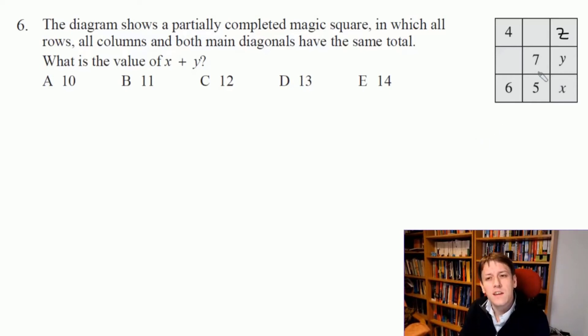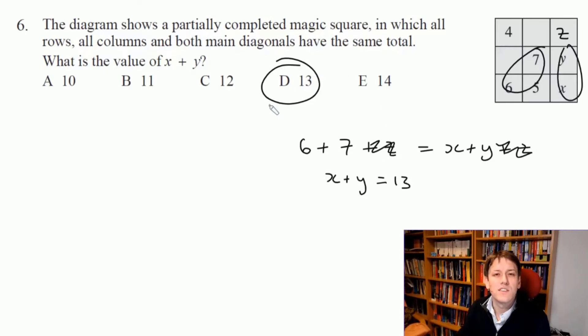So let's say I called this one z. It must be the case that 6 plus 7 plus z is the same as x plus y plus z. So basically these two must add up to the same thing as these two to make that diagonal and that column have the same total. So it must be that x plus y is 6 plus 7, so x plus y equals 13 and the answer is D.